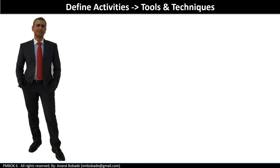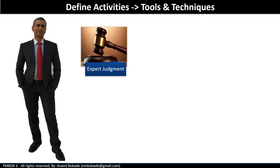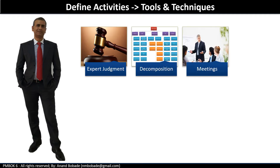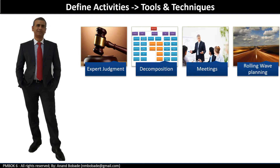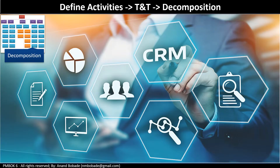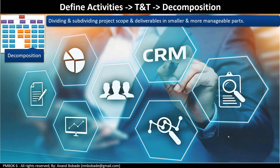The tools and techniques are: expert judgment — individuals or groups who have worked on similar past projects would be helpful in identifying activities needed to produce each work package. Then you have decomposition, meeting, and rolling wave planning. Decomposition is the same technique used in the create work breakdown structure process. This technique takes the scope in the form of deliverables and divides it into smaller, more manageable parts called work packages.